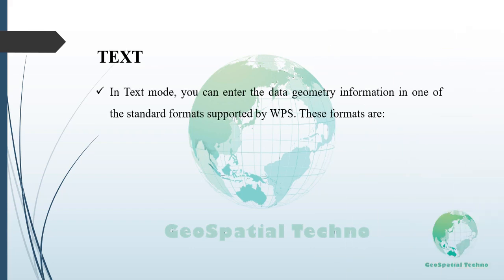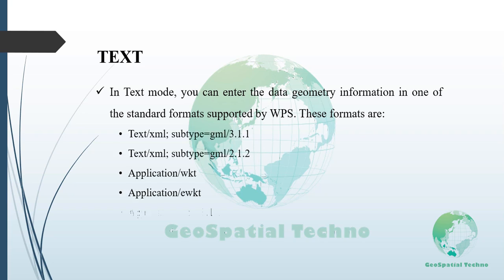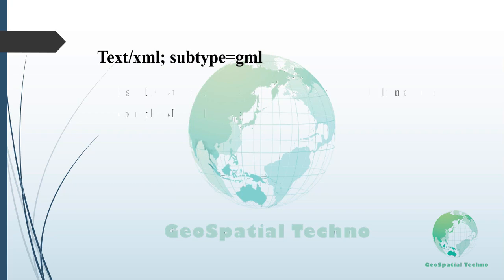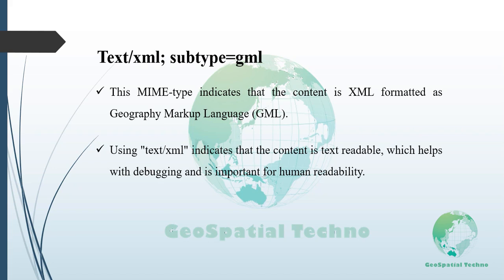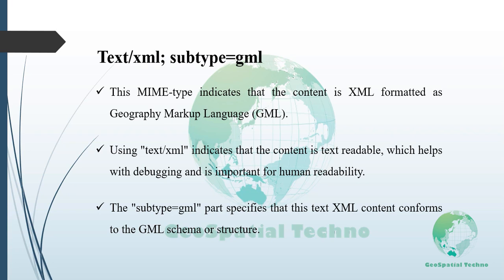In text mode, you can enter the data geometry information in one of the standard formats supported by WPS. One such format is text/xml;subtype=GML. This MIME type indicates that the content is XML formatted as Geographic Markup Language or GML. GML is an XML-based format used for representing and exchanging geographic information including features, geometries, coordinate reference systems, and other spatial data. Using text/XML is helpful for debugging and in contexts where human readability is important.